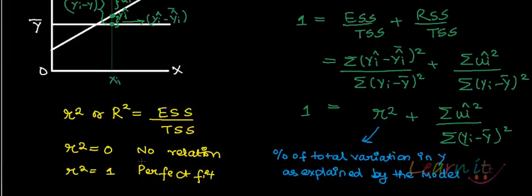R square equal to 0 means there is no relation between X and Y. For example, wages should be dependent upon the size of your shoes — there is no relation between them. So variation in wages would not be explained by that variable, and as R square is near to 0, it means the model is not predicting or explaining much variation in the dependent variable.